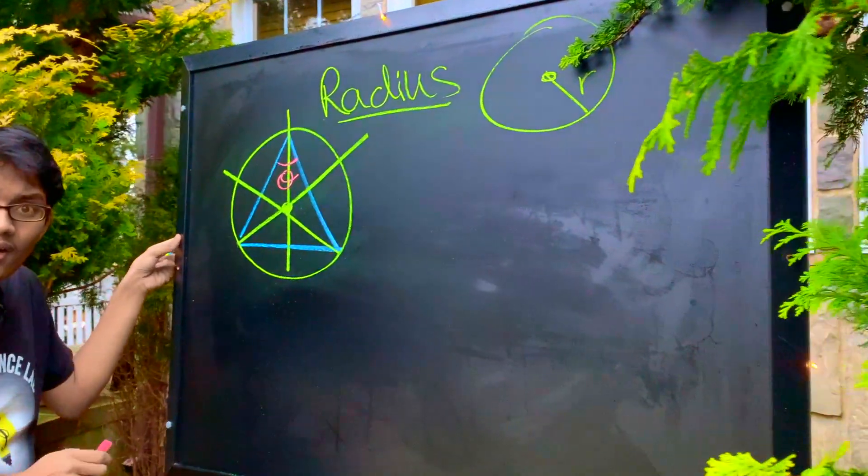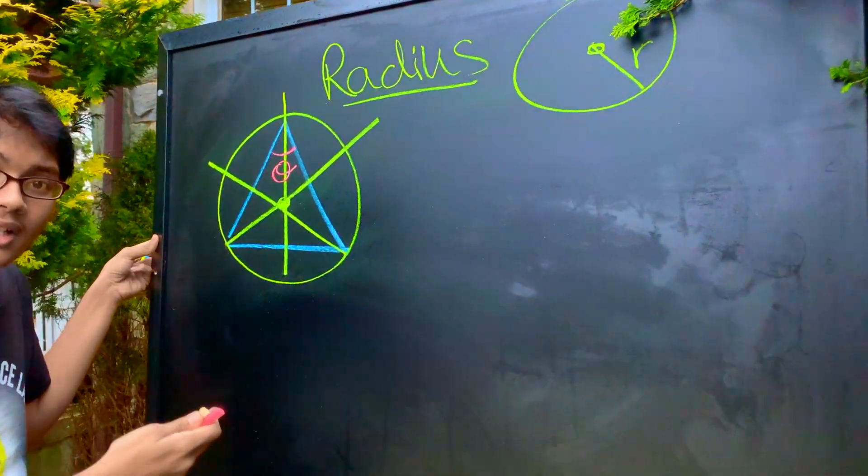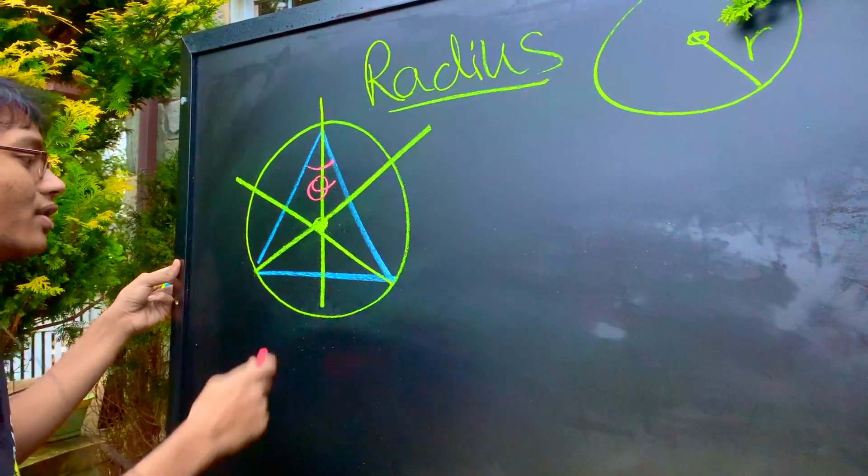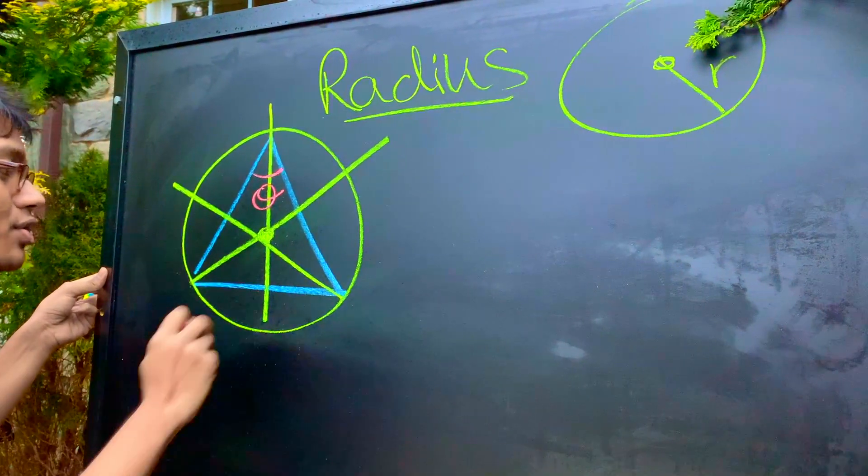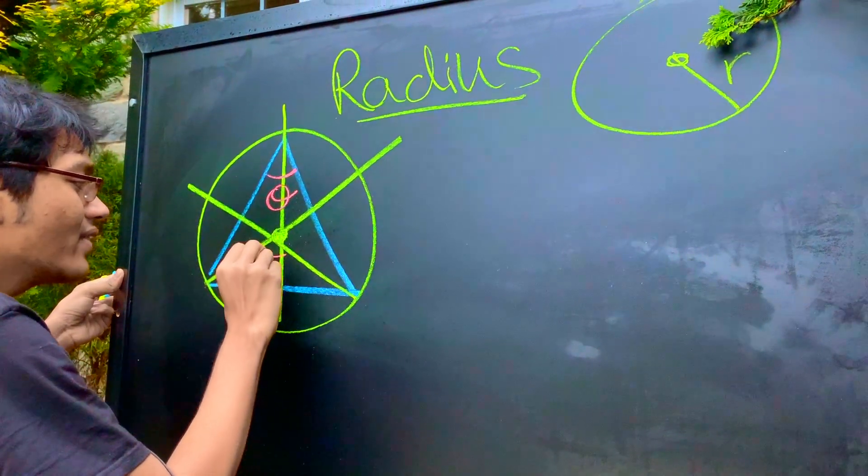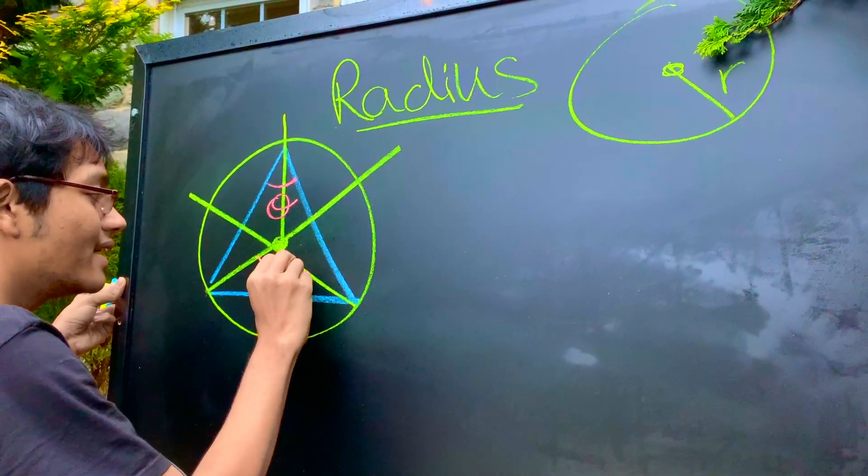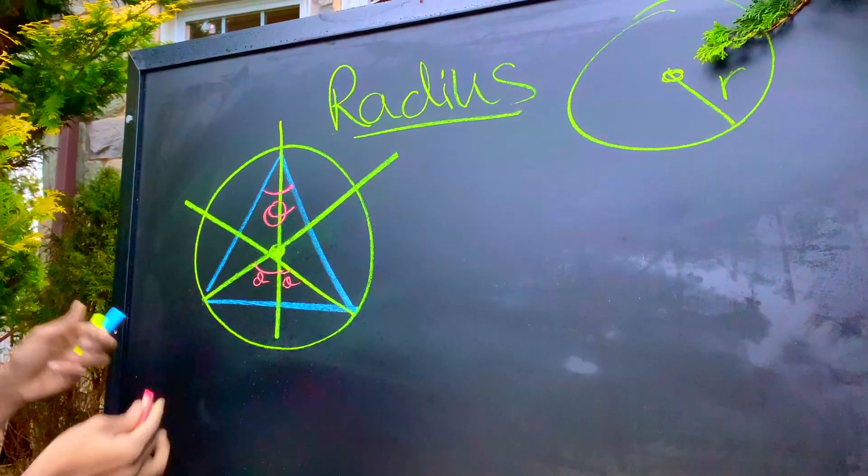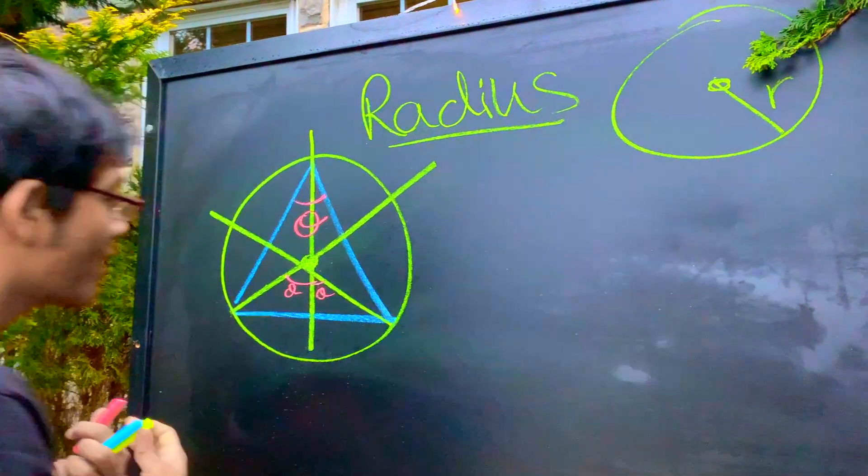Well, if this angle is theta, we know the central angle has to be two times that angle. So this whole angle here is two theta, but if we cut it in half, it becomes theta and theta. Okay, so far so good. Now what can we do?